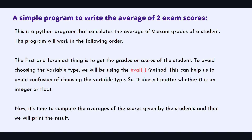Hey everyone, welcome back to the channel and welcome back to Python exercises. Today we're going to do an exercise on average of two exam scores. We're going to take two scores from the user, two grades, perform the average of two numbers and print it. This is pretty simple, and we have to write a Python program. This will be a very useful exercise.